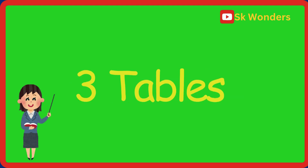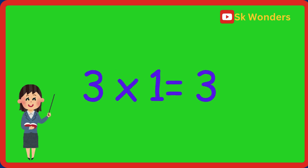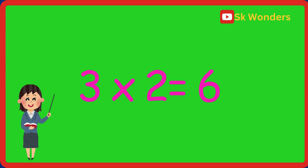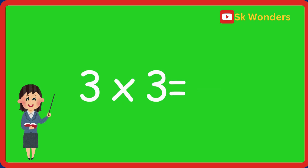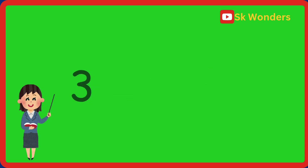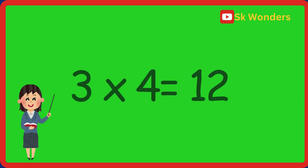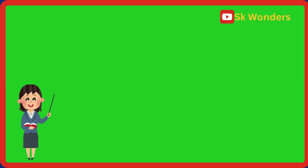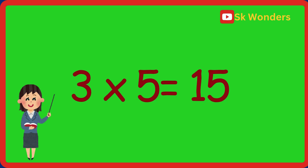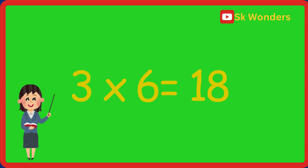Three tables. Three times one is three. Three times one is three. Three times two is six. Three times two is six. Three times three is nine. Three times three is nine. Three times four is twelve. Three times four is twelve. Three times five is fifteen. Three times five is fifteen.